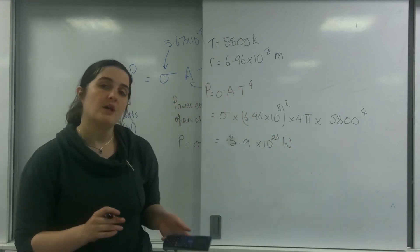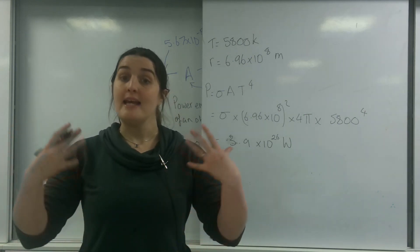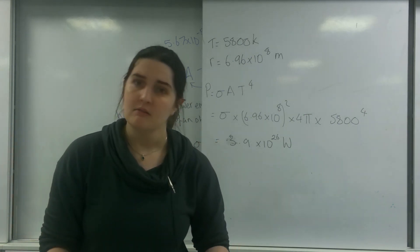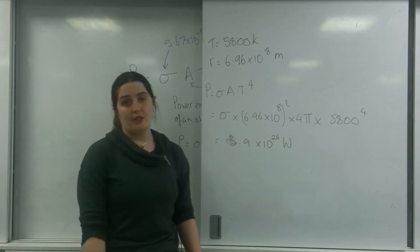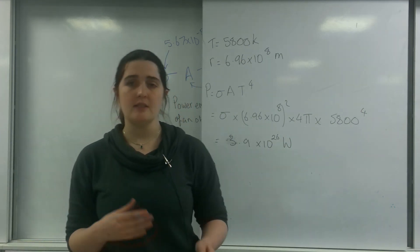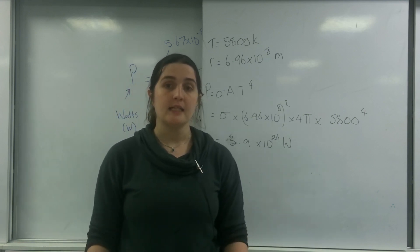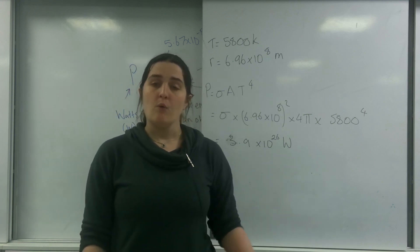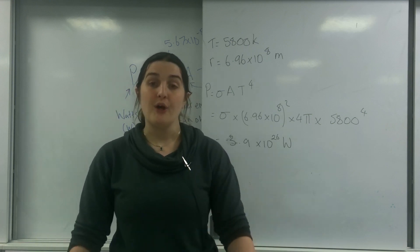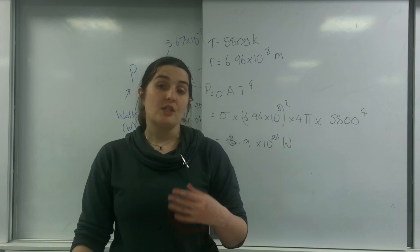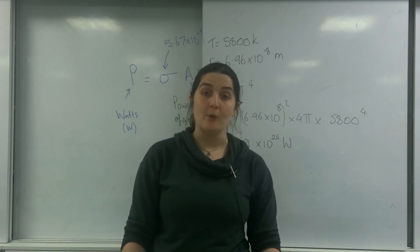So this is how much power — energy per second — that our sun emits on average. This assumes no fluctuations from sunspots etc. Now, we do not receive that amount of energy here on Earth. We actually receive a much smaller amount, and this is because of the inverse square law.